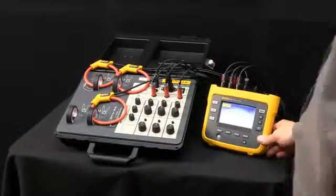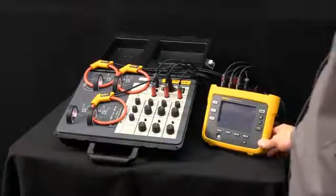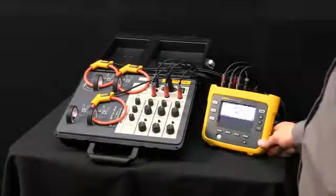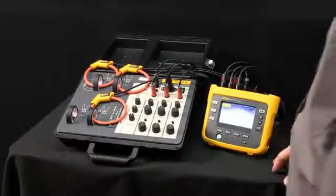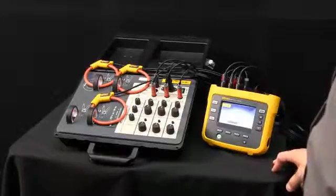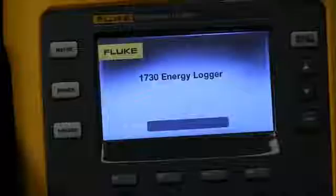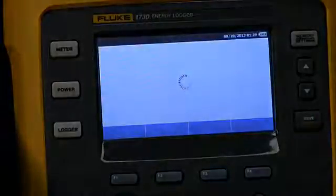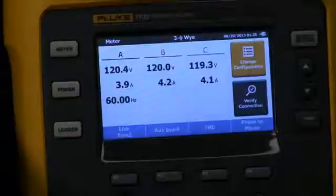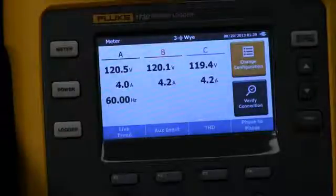Once the connections are made, let's go ahead and power the unit on. Whether we got our connections hooked up properly, we'll be able to identify that when the logger powers on and one of the screens will show us that we've got all of our CTs turned the right direction whereas all the arrows should be facing towards the load or maybe we've got something mixed up.